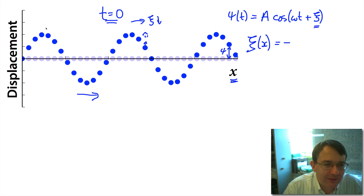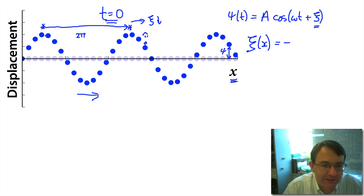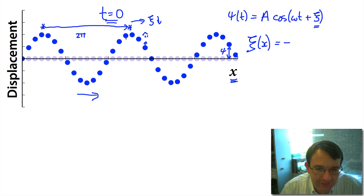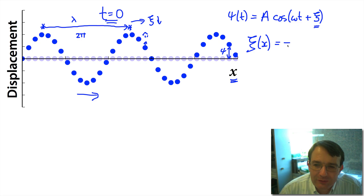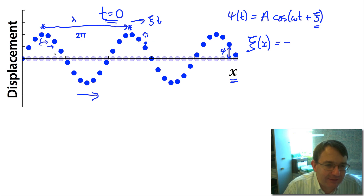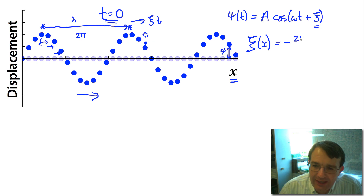Now, if I look at this wave crest and move to the next wave crest, I've gone through a phase change of two pi radians, because I've started and ended at a point with the same equivalent phase — that's one full cycle. By definition, the distance between two points with the same equivalent phase is the wavelength λ. We assume the phase change between adjacent oscillators is the same each time, giving a linear change in phase. So I can write φ as a function of x as: minus two pi over λ times x.